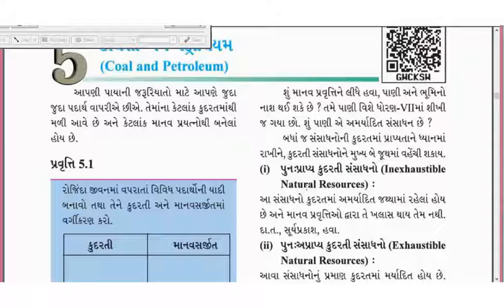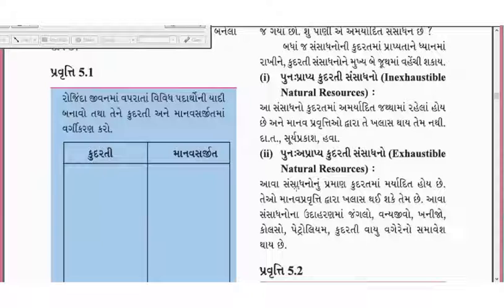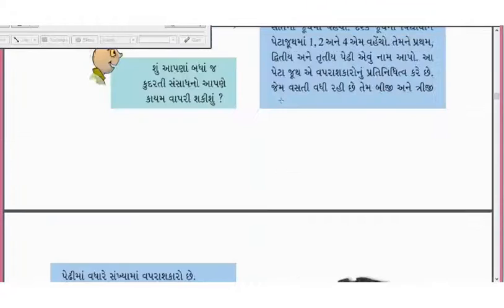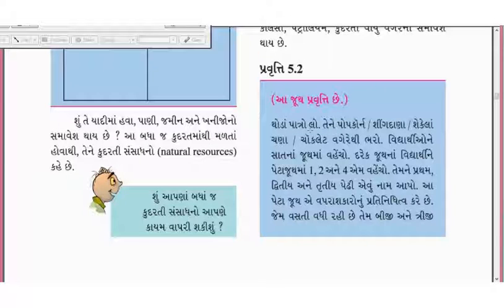આ સ્ત્રોતો કુદ્રતમાં મર્યાદિત જથ્થામાં રહેલા છે. જ્યારે ખૂટી જાય ત્યારે આપણે એટલા વાપરી પણ ફરી પ્રાપ્ય ન થઈ શકે. આ સ્ત્રોતોનો જથ્થો કુદ્રતમાં મર્યાદિત છે. જેમ કે જંગલો, વન્ય જીવો, ખનીજો, કોલ્સો, પેટ્રોલ્યમ, કુદ્રતી વાયુ વગેરે.